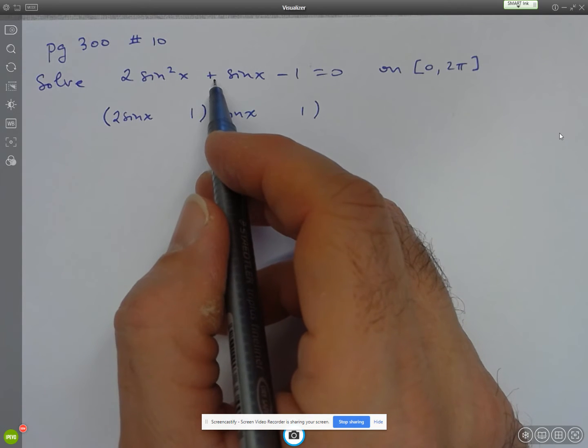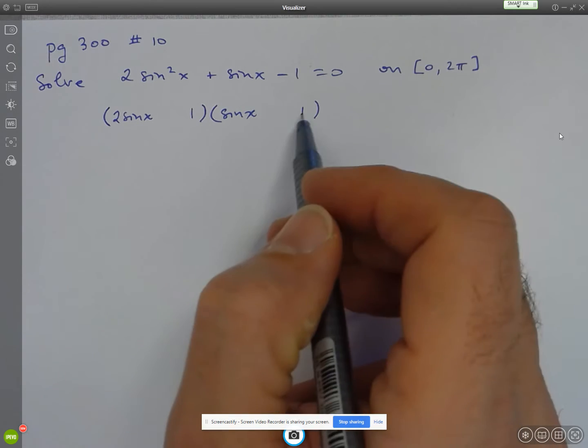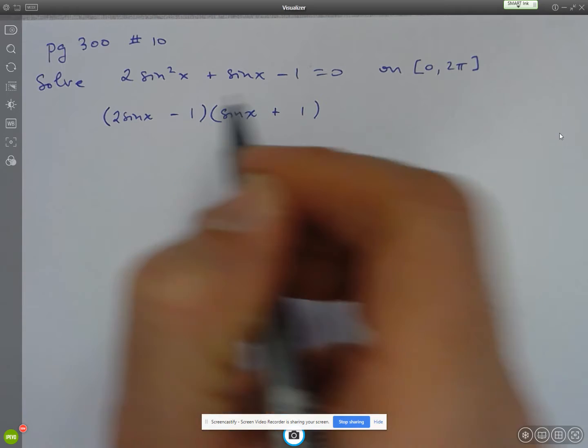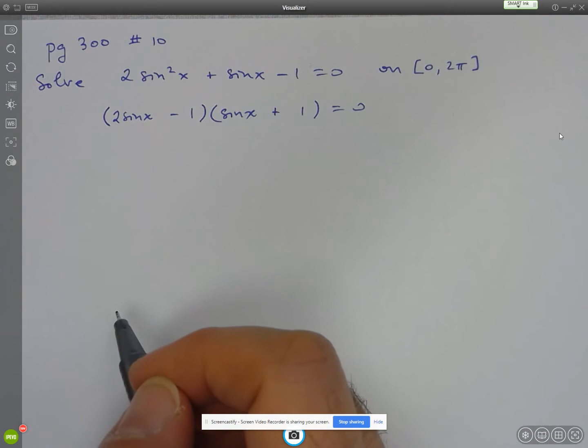So here, since I needed to add up to positive sin x, it's going to be positive 2 minus 1. And then equals 0. All right.